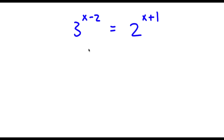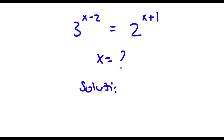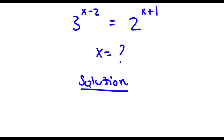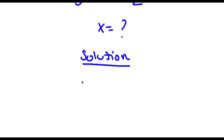Alright, so I have 3 to the power of x minus 2 is equal to 2 to the power of x plus 1. So right here I want to find the value of x. So for my solution, I start with 3 to the power of x minus 2 is equal to 2 to the power of x plus 1.